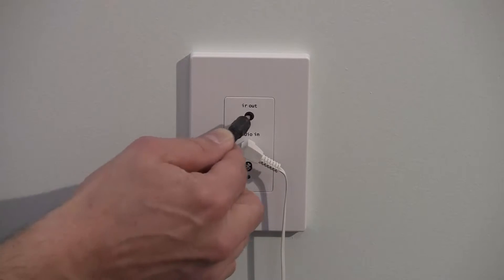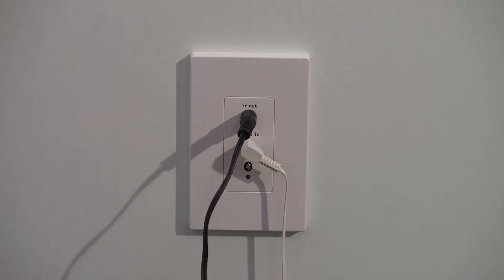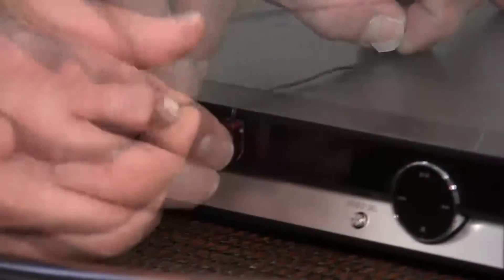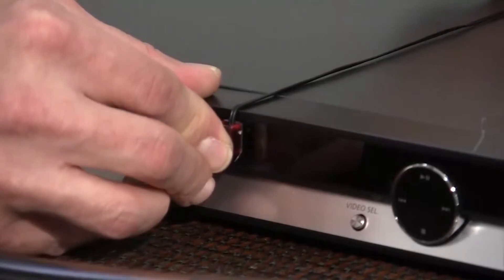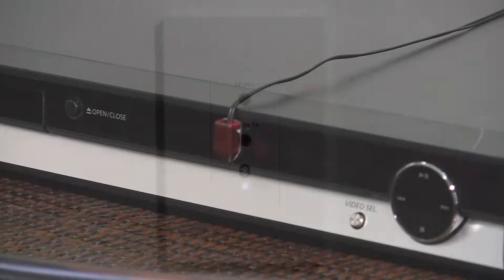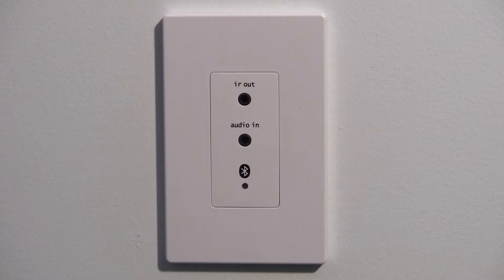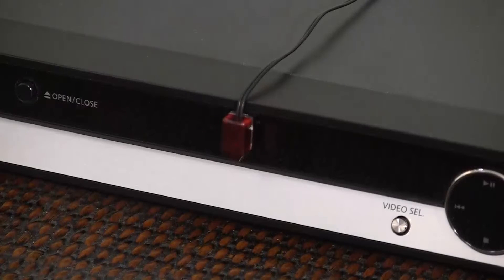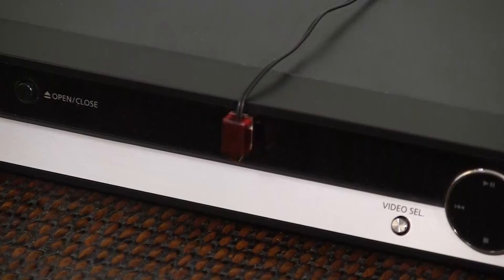The rim also has a second port labeled IR out. Each rim ships with an IR flasher used for sending IR data to the source equipment if desired. When you point your source equipment remote control at the IR receiver and the volume source control, the IR data is routed to the appropriate rim to which the source equipment is connected, which then sends the IR signal through the IR flasher to the source equipment.